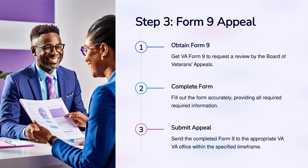Step 3: Form 9 Appeal. Obtain Form 9: get VA Form 9 to request a review by the Board of Veterans' Appeals. Complete the form accurately, providing all required information. Submit Appeal: send the completed Form 9 to the appropriate VA office within the specified timeframe.